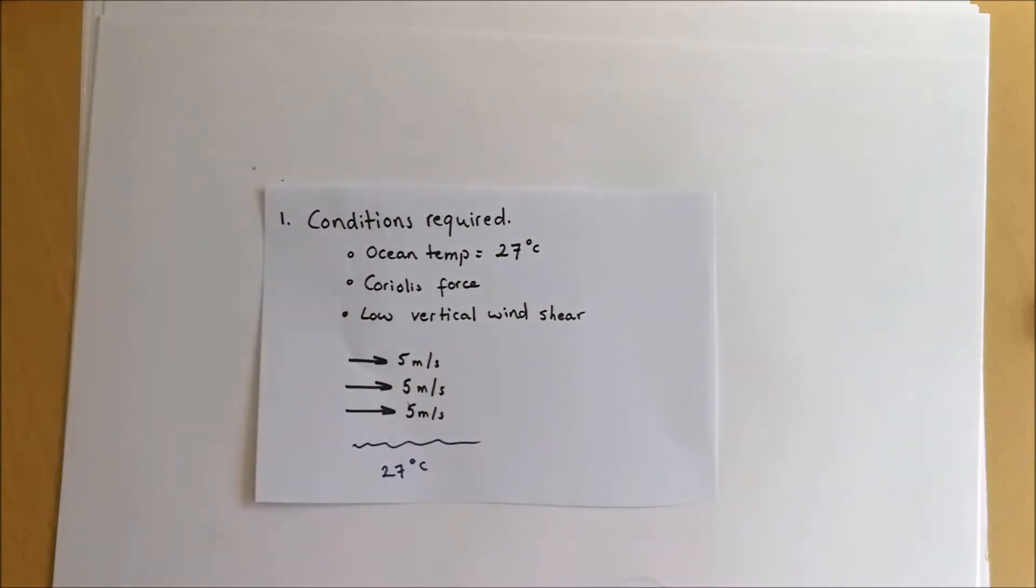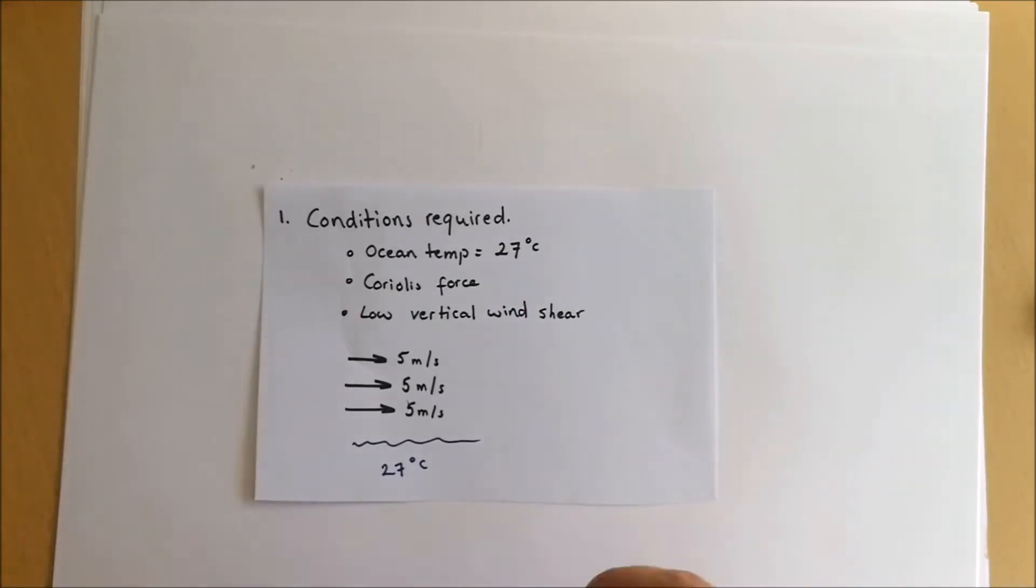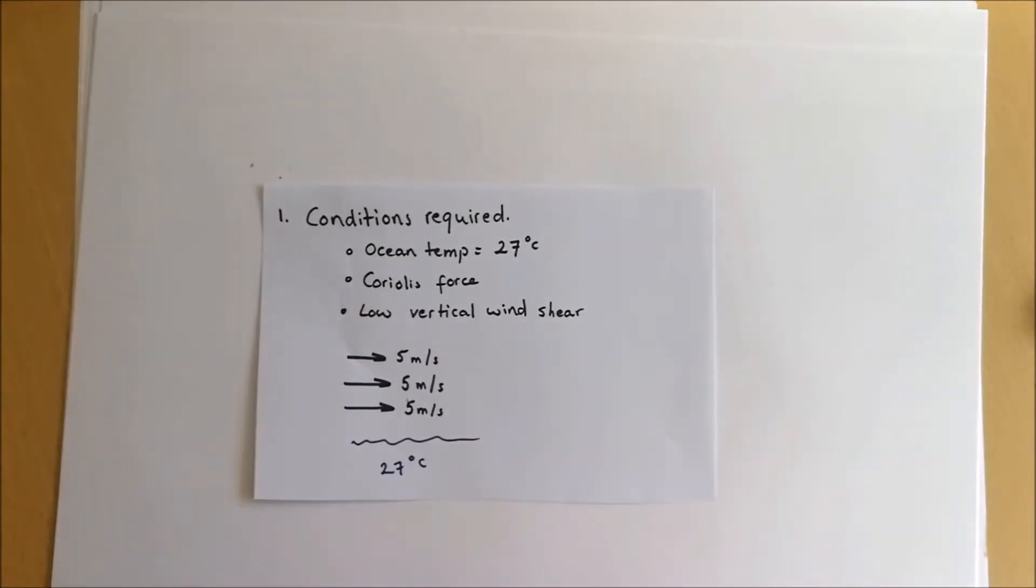There are three major conditions that we need to concern ourselves with. First, they need an ocean temperature of 27 degrees Celsius. That is fundamental for a tropical storm to form; it provides the basic energy required for the storm to develop.